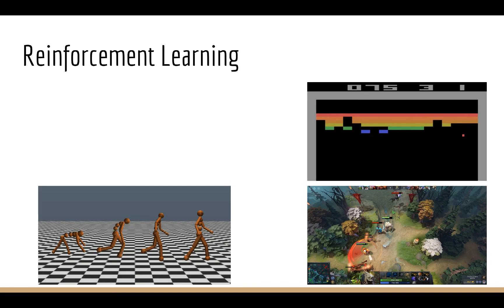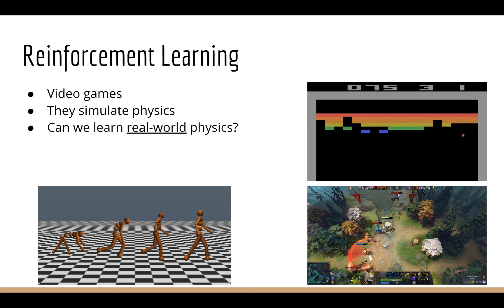Another important application of reinforcement learning is playing video games. These algorithms have demonstrated superhuman abilities at Atari games and more recently Dota 2. Video games are important because they simulate physics, so if an algorithm can learn simulated physics, it's reasonable to assume it can learn real-world physics. In fact, we have examples of RL algorithms that can learn to walk, run, jump, and navigate. But reinforcement learning is a whole different beast than supervised and unsupervised learning, so it's good to get a solid grounding in both of those first.